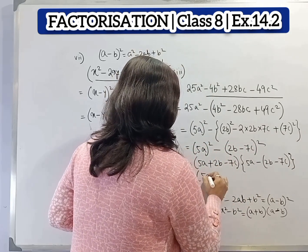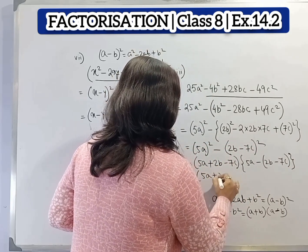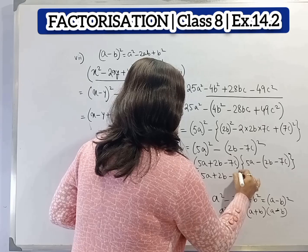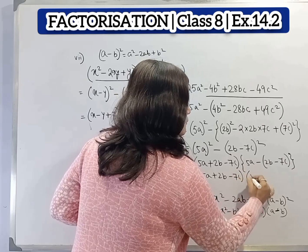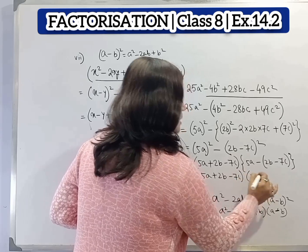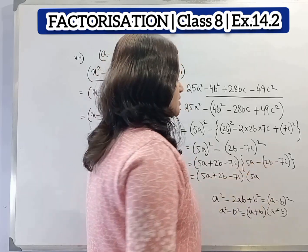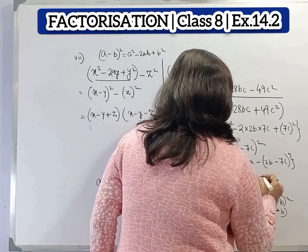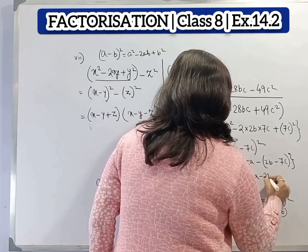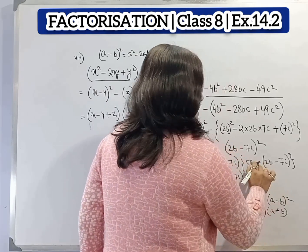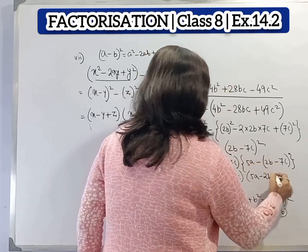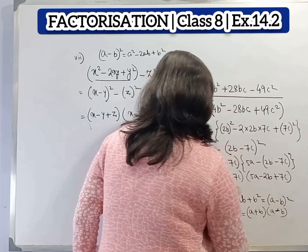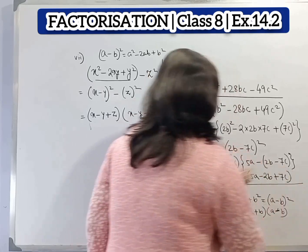So the final answer is 5a plus 2b minus 7c into 5a minus 2b plus 7c. Note that minus multiplied by minus 2b gives minus 2b, and minus multiplied by minus 7c gives plus 7c. This is the answer.